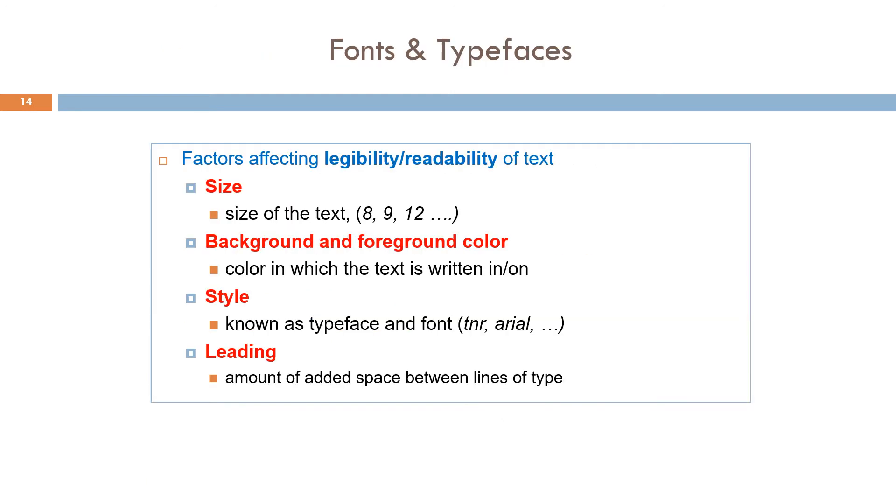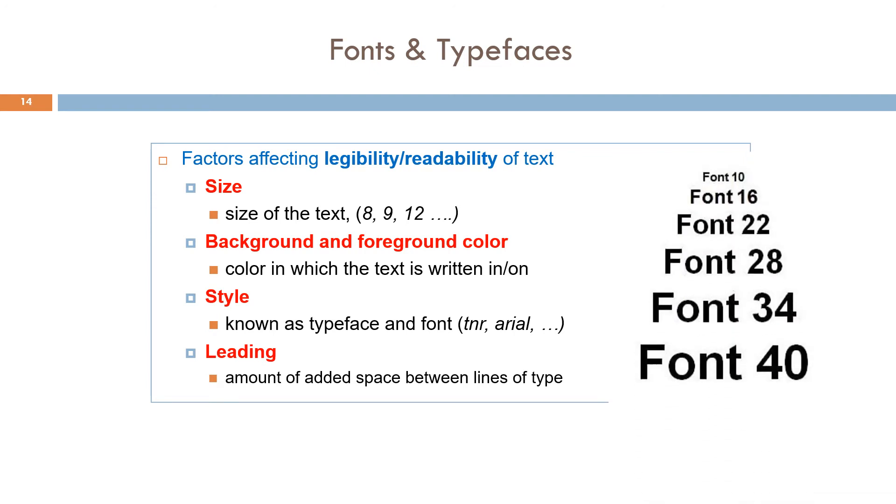Now we discuss the factors that affect the legibility or readability of text. There are four factors. First, size of text. The font size or text size is how large the characters displayed on a screen or printed on a page area. For example, size of text 8, 9, 10, 12, 20, 40 and so on.